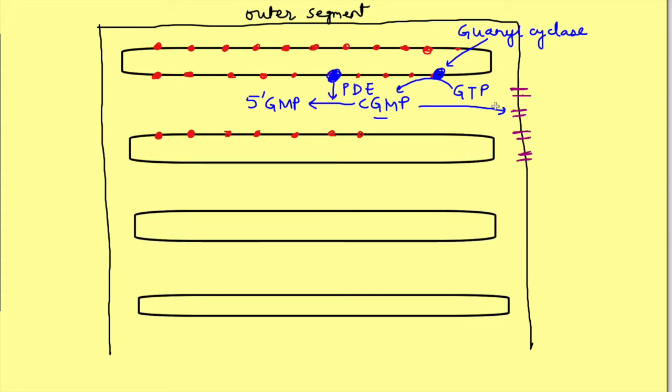Normally in dark or in absence of photons, the concentration of cGMP is high since the enzyme guanyl cyclase is continuously active. This keeps the sodium channels open causing entry of sodium ions and the cell remains in depolarized state in dark. And just like any other neuron, depolarization causes release of the neurotransmitters from the synaptic terminal. So basically in dark, these neurotransmitters are continuously being released since the channels are open.